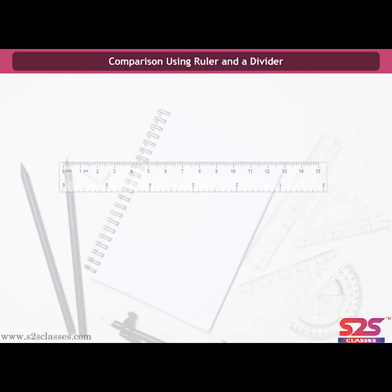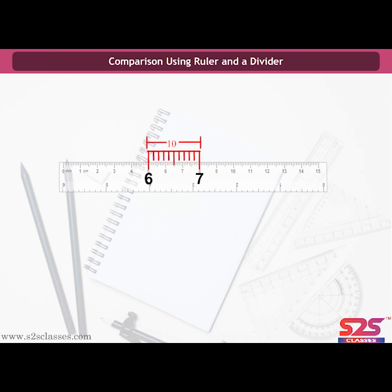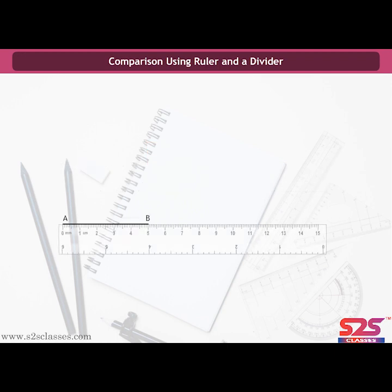Comparison using ruler and a divider. First, let us know about a ruler and a divider. A ruler is divided into 15 parts, each of which has length 1 cm. Each cm is divided into 10 sub-parts, each of which is of length 1 mm. Now let us measure line segment AB. Place the 0 mark on the ruler at one end of the line segment, say A. Read the mark at B — it is 5 cm. So the length of AB is 5 cm.